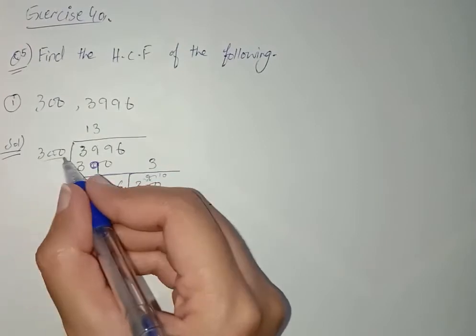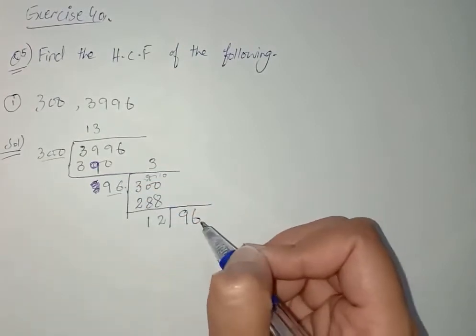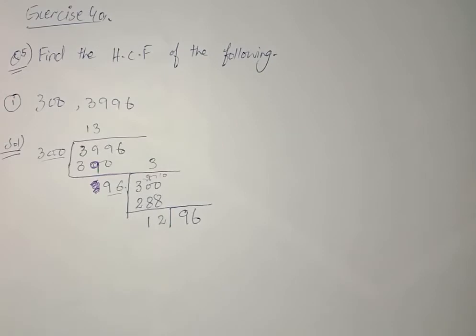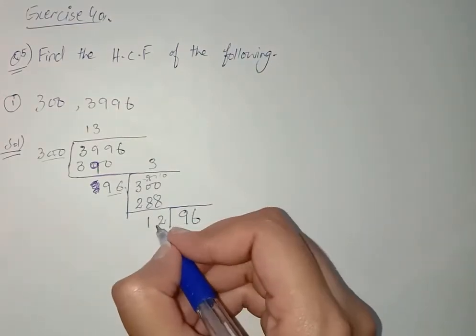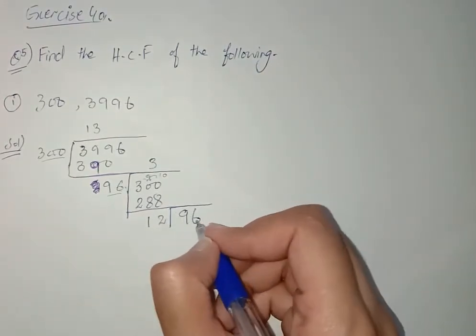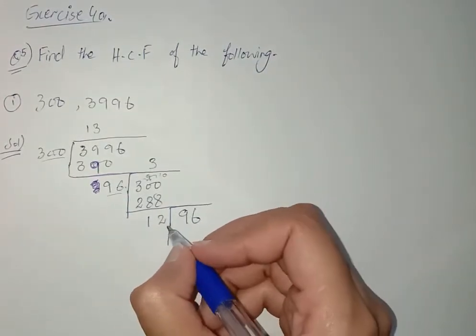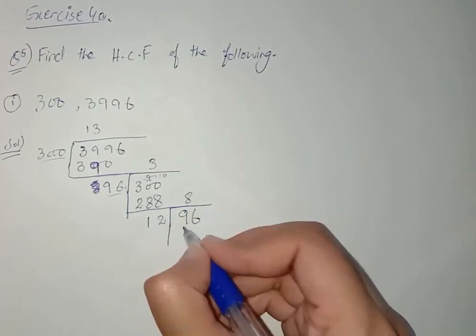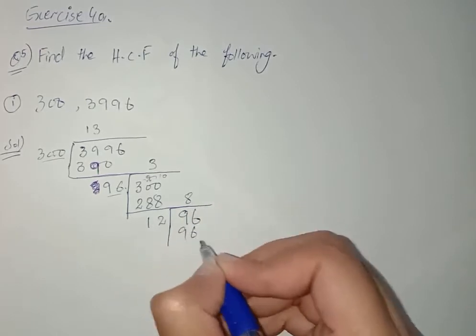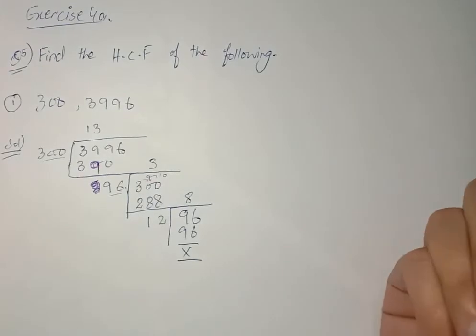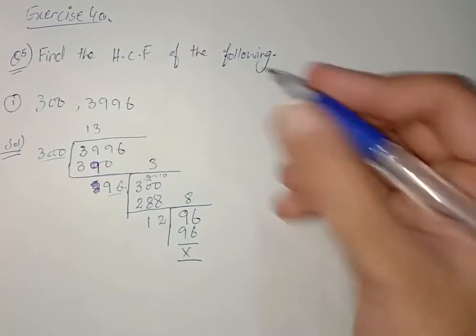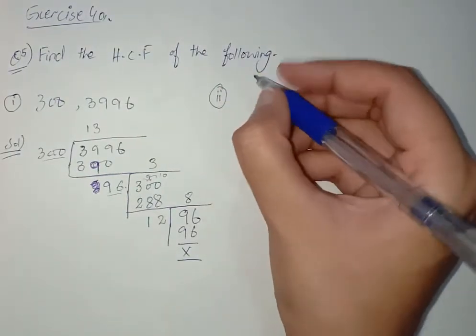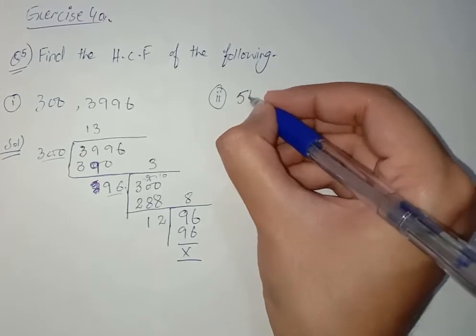The value which divides comes into the next bracket. Now we have to multiply 12 with some value so we can get 96 or below the value of 96. If we multiply 12 with 8, the answer is 96 exactly — so this part is completed. Now move towards part number two.